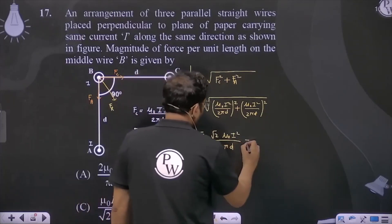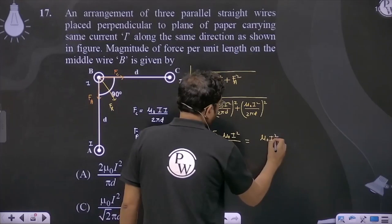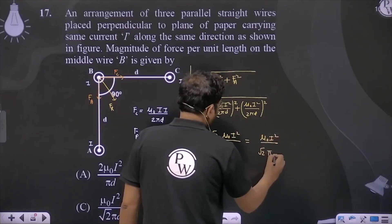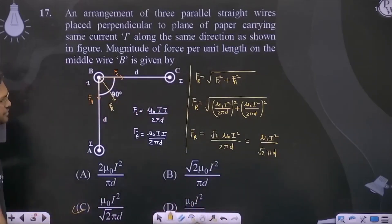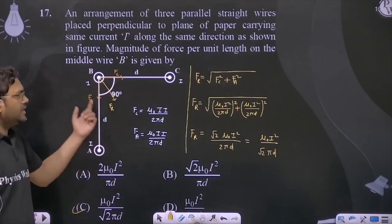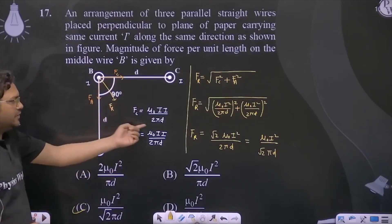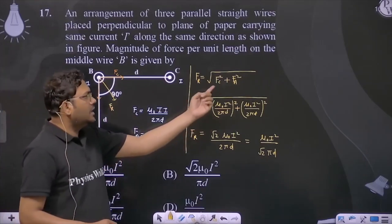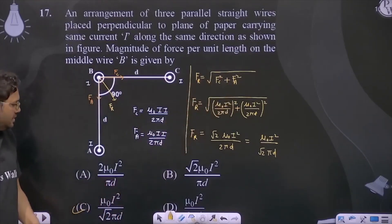So the result becomes μ₀I²/(√2 · πd). According to this, option C is the correct option. Both forces are equal in magnitude but mutually perpendicular, so the net force comes from √(FC² + FA²). The result is option C.